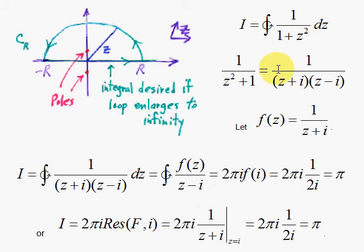So here is my function that's in the integrand, and the way I find the residue is I throw away the singularity part, the z minus i. I clear the denominator for that and then put in i for the rest of it. So that's 1 over 2i, so I jump from here right down to there, 2's cancel, i's cancel, and I get π by result.